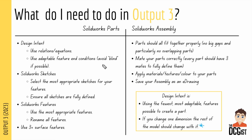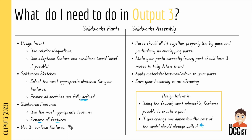For SOLIDWORKS sketches, select the most appropriate sketches for your features and ensure all sketches are fully defined — having undefined sketches is unforgivable and a real waste of marks. You'll achieve this by adding dimensions, relations, and equations. For features, use the most appropriate features and rename all of them — again, renaming is unforgivable to leave out because it's so easy to do. I'd also recommend including three surface features to show your parametric modeling ability.